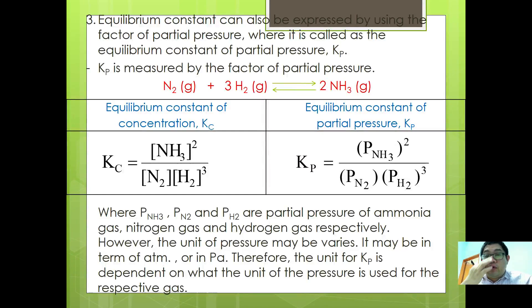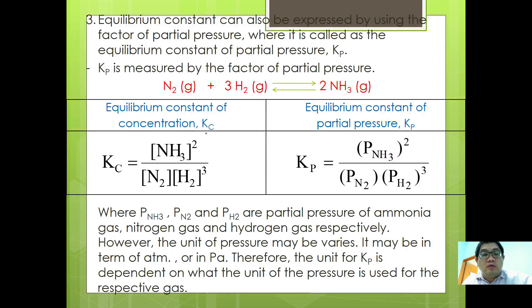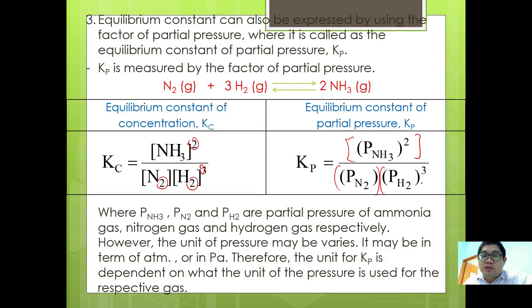Other than Kc, there is also another type of equilibrium constant called the equilibrium constant of partial pressure, Kp. Kp is measured by the factor of partial pressure. For example, in the Haber process, N2 + 3H2 ⇌ 2NH3, the equilibrium constant Kc = [NH3]² / [N2][H2]³. When we express Kp, it's more or less the same — we substitute with partial pressures: Kp = P(NH3)² / P(N2) × P(H2)³. Similar to Kc, the unit of Kp also varies, and Kp can be measured in either atmospheres or Pascals.